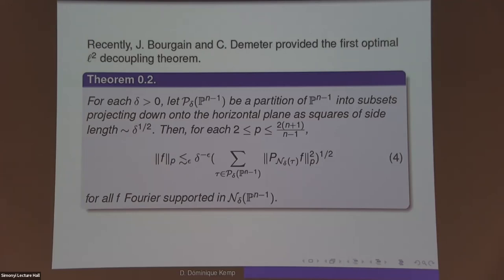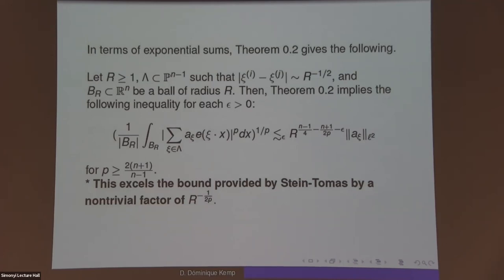Note that P has to be between 2 and the Stein-Tomas index, famous for restriction theory. Concerning exponential sums, there was an initial bound for exponential sums where frequencies are taken within an N-1 dimensional paraboloid. Decoupling beats the bound provided by the Stein-Tomas L² restriction theorem by a factor of N^(-1/2P), giving us the sharp inequality.